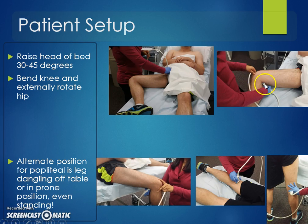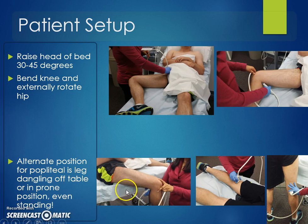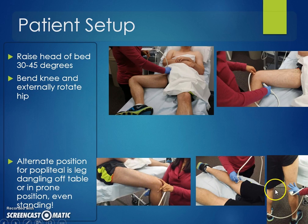When moving to the popliteal space, accessing from behind is ideal, but you can also have the patient dangle the leg over the edge of the bed, use the prone position, or even the standing position.